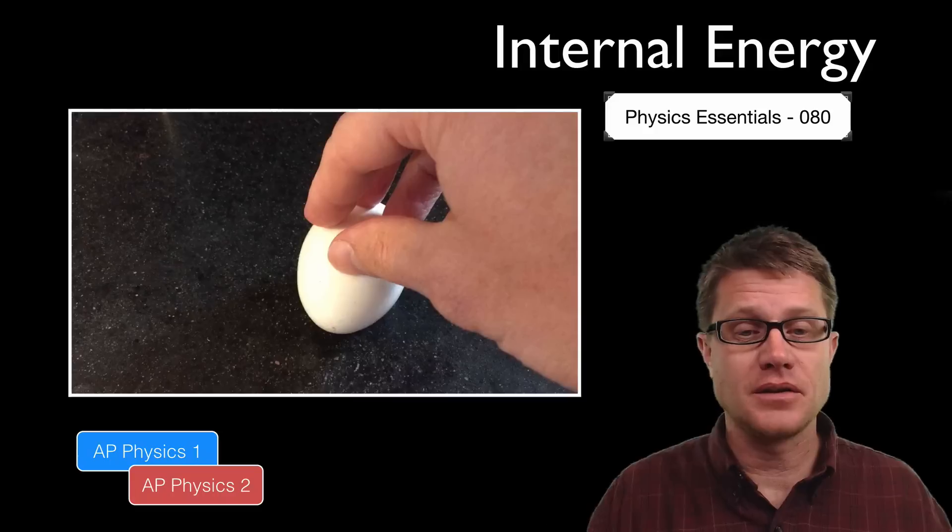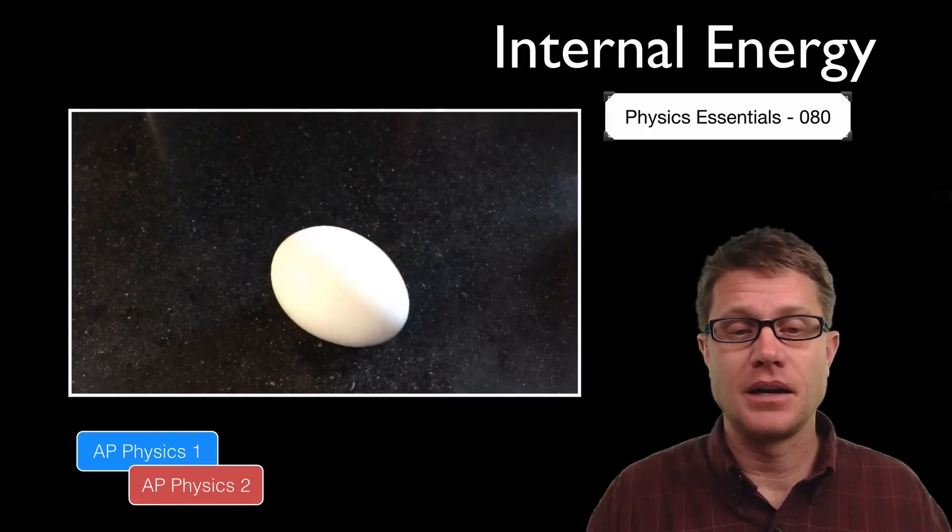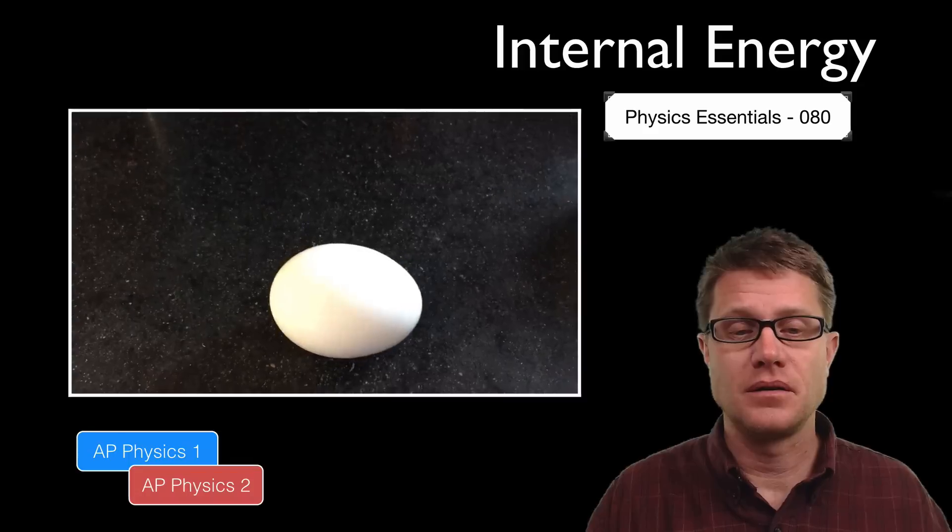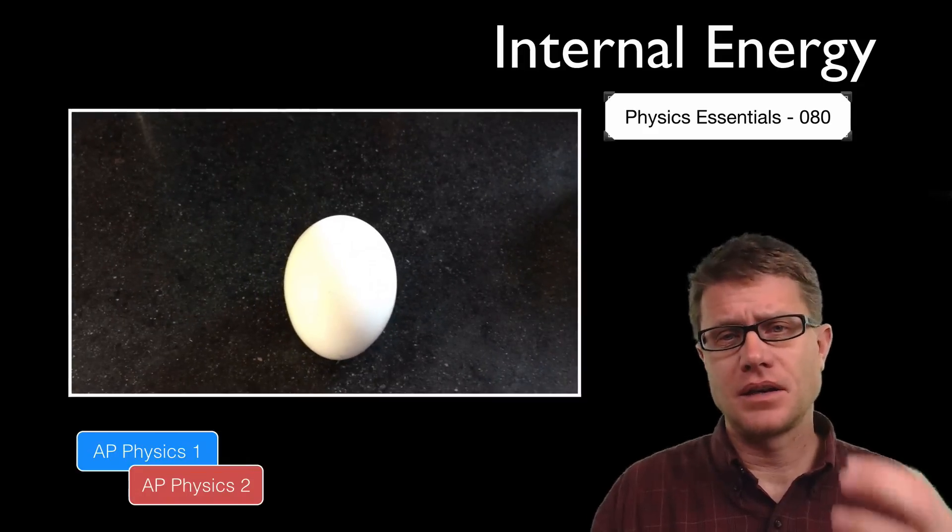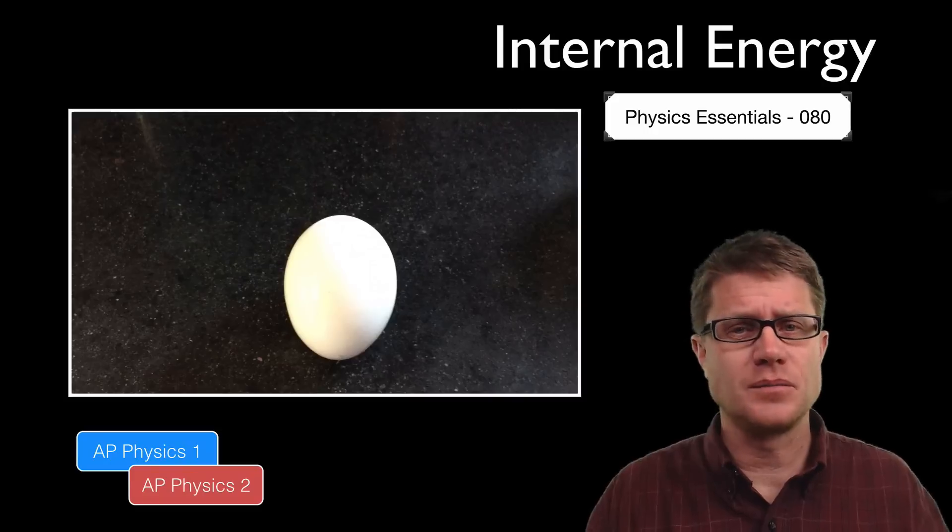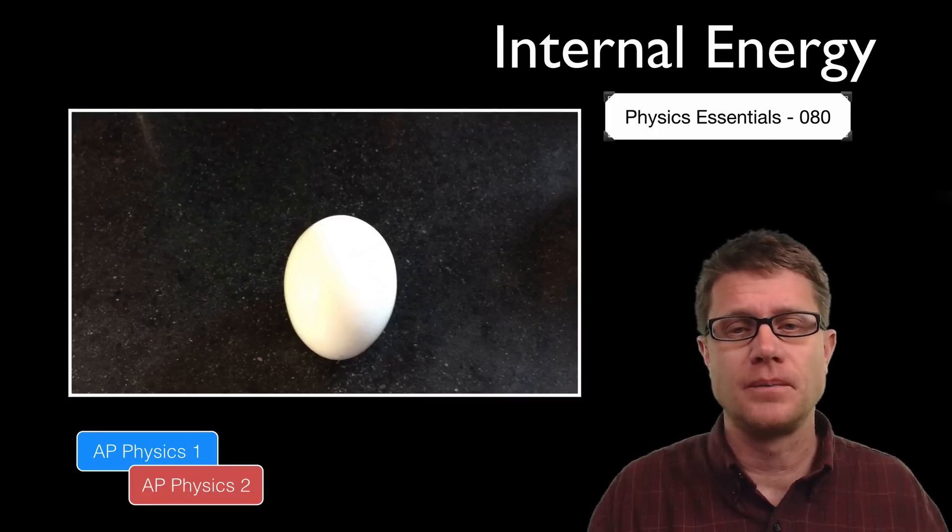I am going to start with this system right here. We have got an egg. I am going to release my hand from the egg and it starts to spin, which seems kind of magical. If we treat that egg as an object, how could it just start spinning? It seems like there is no force being applied to it.